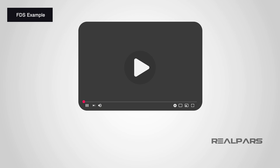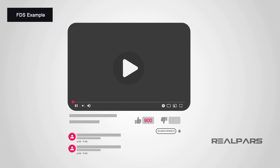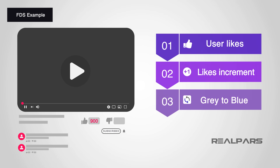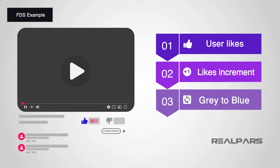For example, if we were writing a Functional Design Specification for this RealPars video, we may include a statement such as: when the user clicks the Like button, which is indicated by the Thumbs Up icon, the Number of Likes counter will increment by a value of 1, and the Thumbs Up icon will change from gray to blue as a visual indicator to the user that this has been selected. Note how this statement describes the action and effect of clicking the Like button, but does not discuss how the coding for this button operation works.